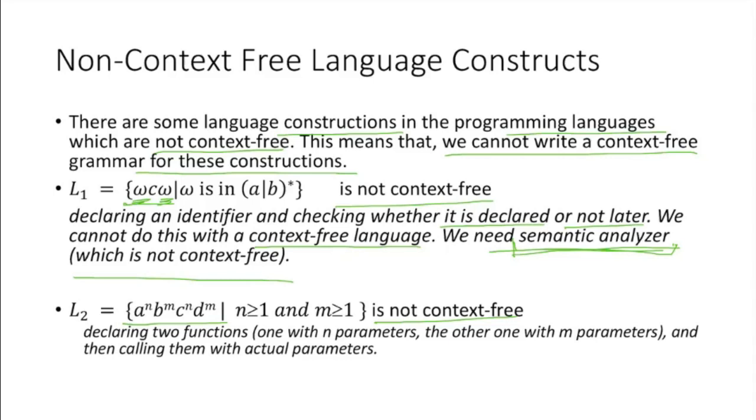Because, if it is only a to the power n, b to the power n, it can be context-free.